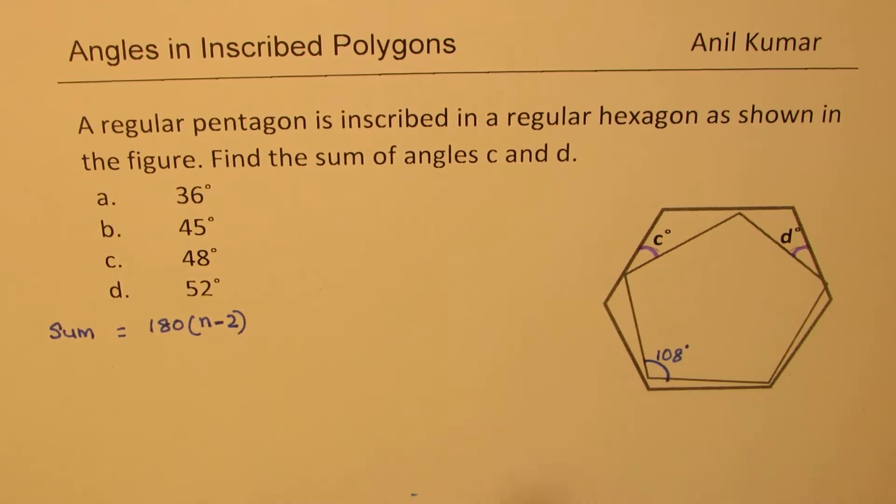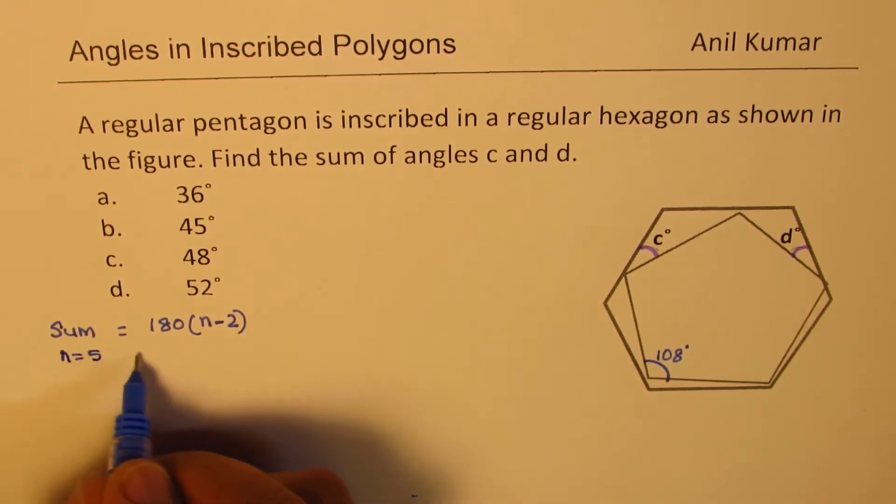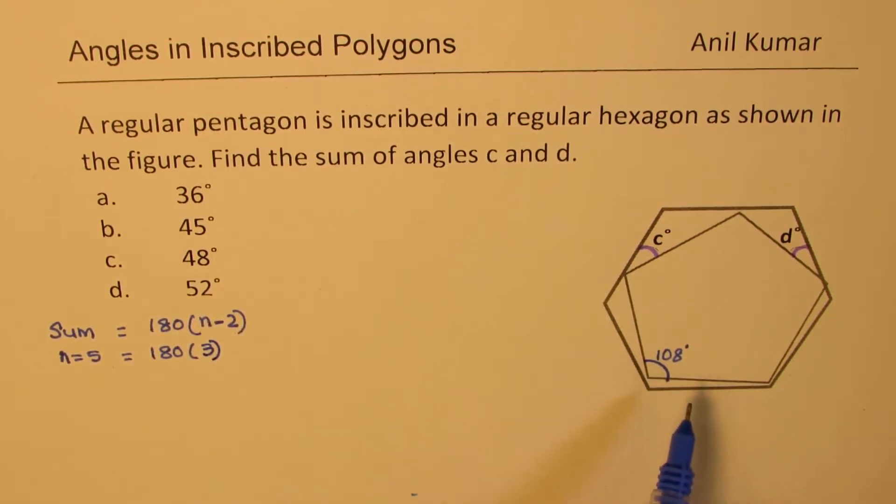Now in this particular case for a pentagon, the sum for a pentagon will be how much? N is 5. So if N equals 5, then the sum of angles will be 180 times 5 minus 2, which is 3. So that is the sum of angles in a pentagon.